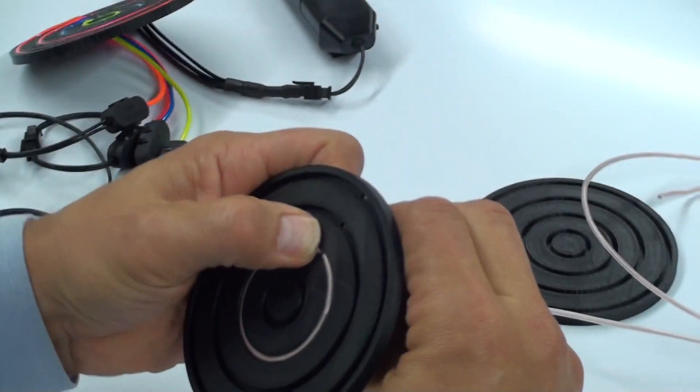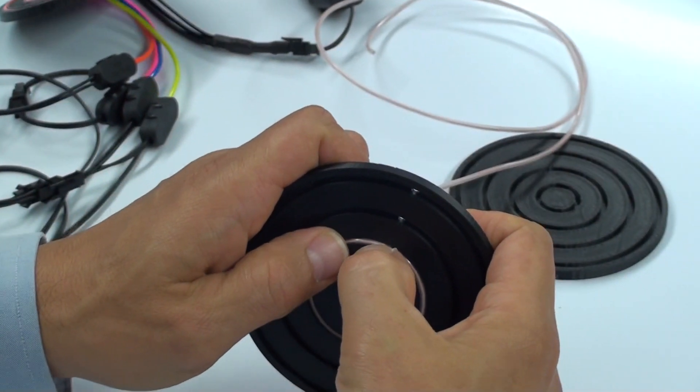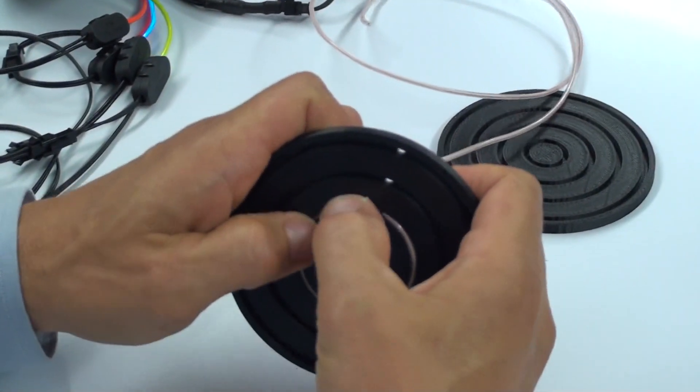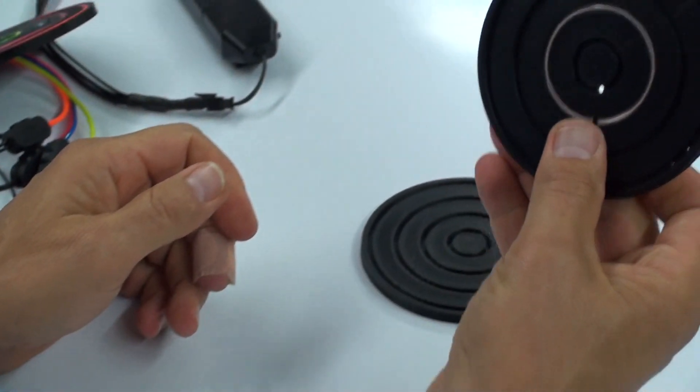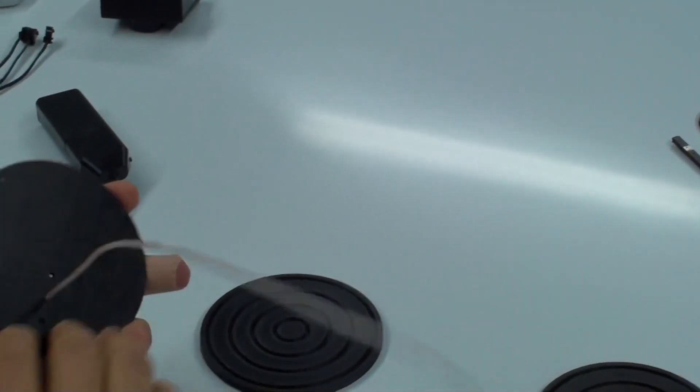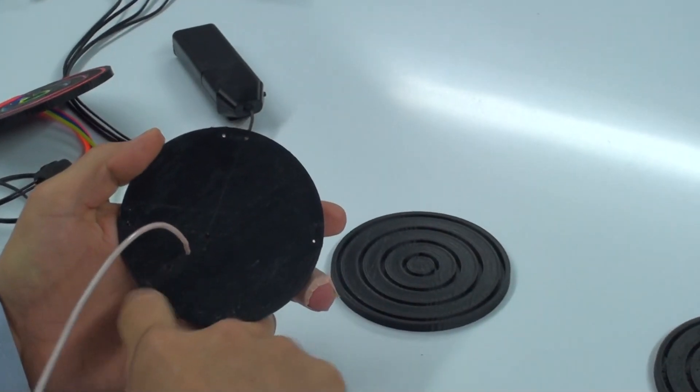And then you just push down, push down, push down, and then here if it pops out a little bit you can just get like a little tool or just use your fingernail to really push it down. And so now you end up with a really nice clean circle and then you would do the same thing with the other three.